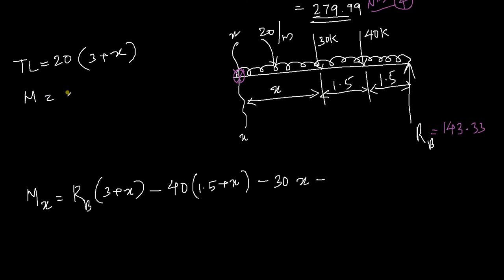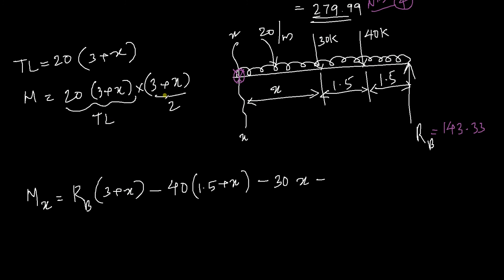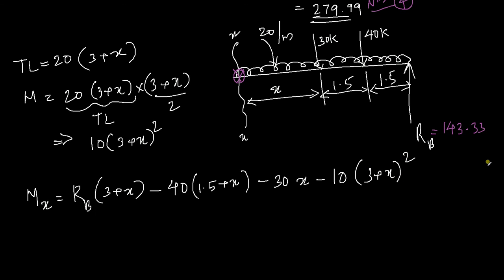The moment due to the UDL will be 20 times (3 + x), multiplied by (3 + x)/2, because the total load acts as a point load at half the distance. So the moment due to the UDL becomes 10 times (3 + x) squared. That is your moment equation: 10 times (3 + x) squared.